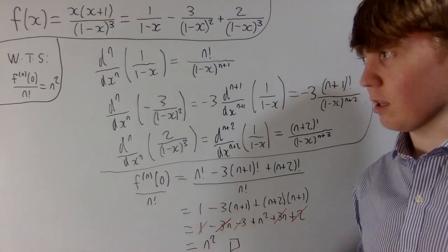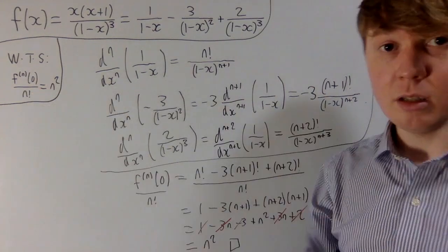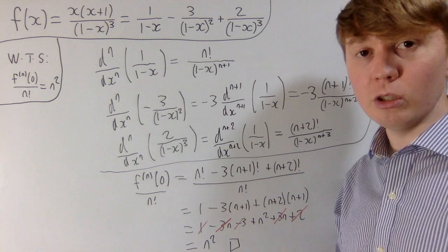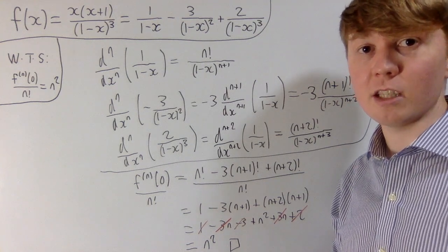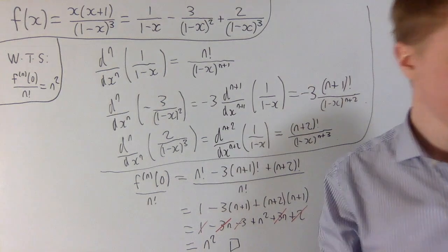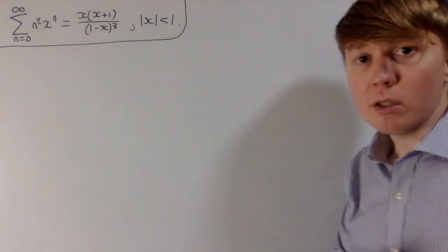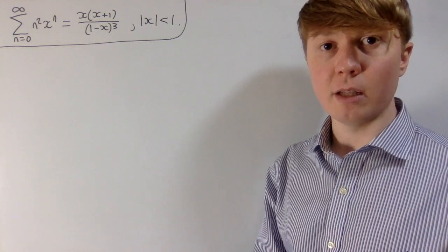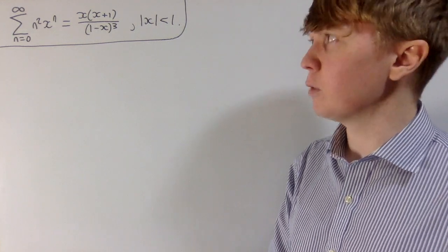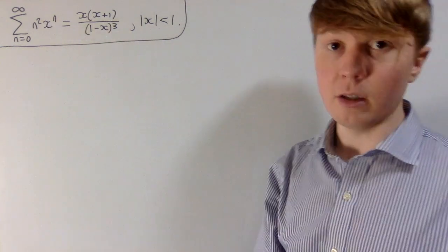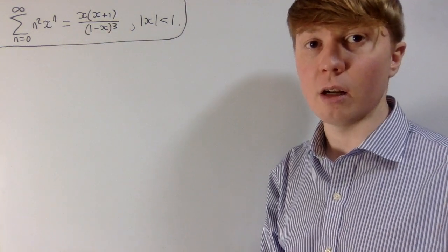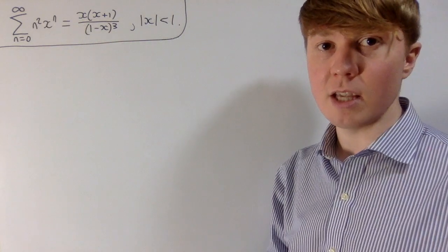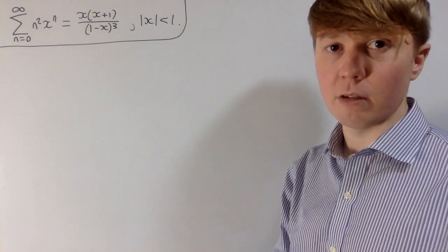So what we've shown is that the coefficient of xⁿ in our Maclaurin series expansion is indeed n². All the coefficients in the Maclaurin series expansion of f are the square numbers. Now we'll try to answer the question of where this function actually comes from. Perhaps it makes more sense to start with the infinite series with square-number coefficients and then try to evaluate it to see what function you get.